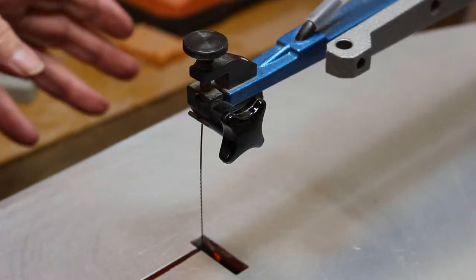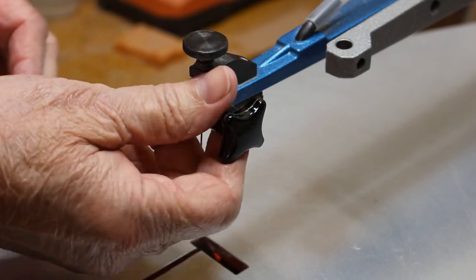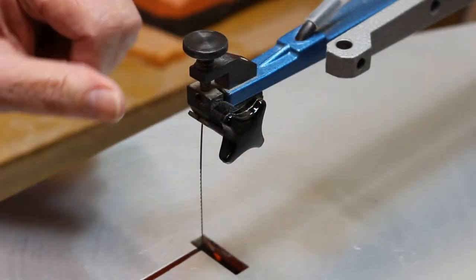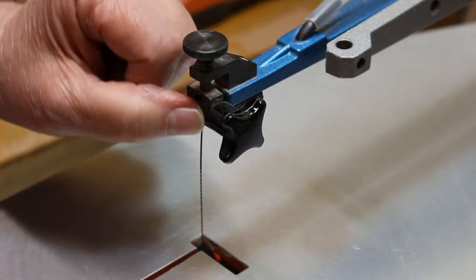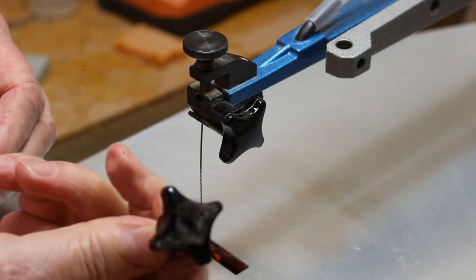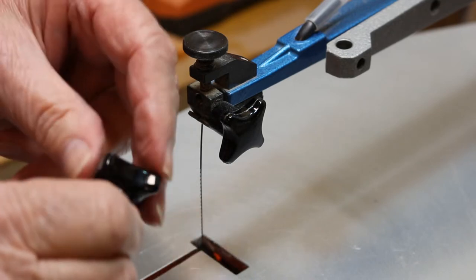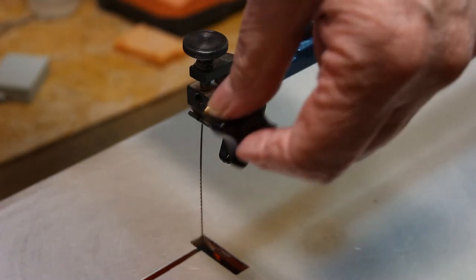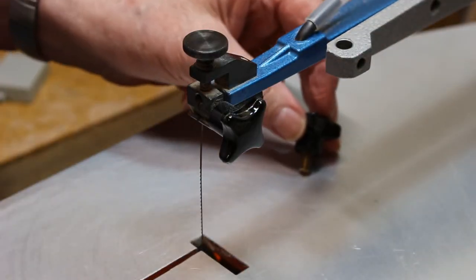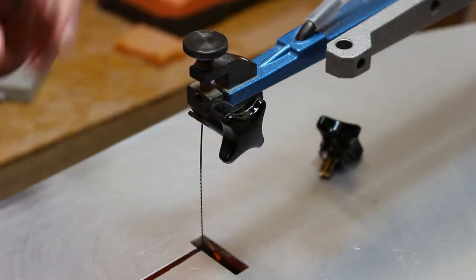Now the older model Hegner scroll saws have a star knob that tightens the upper blade clamp. Looks a lot like this one that I have in my hand. It's just a little stud. Goes in and tightens the clamp. Works fine.